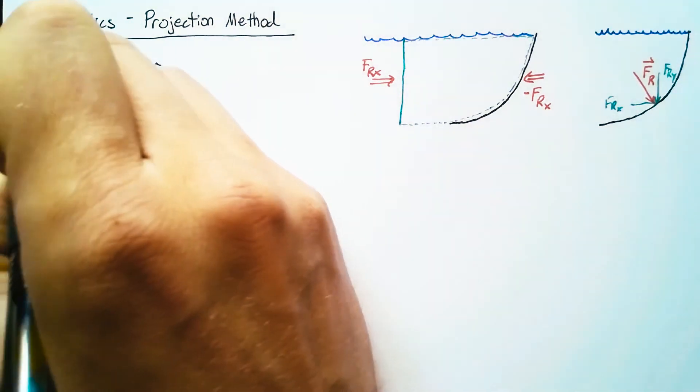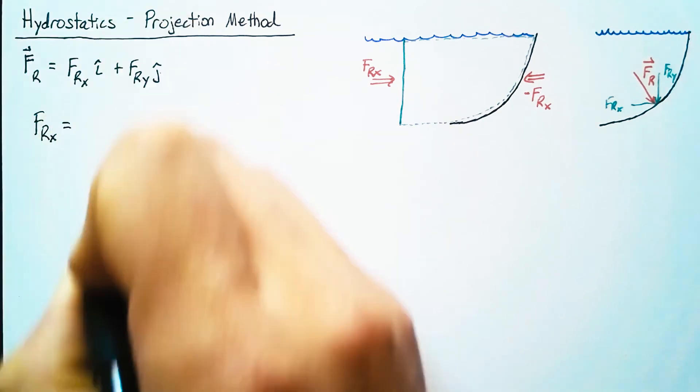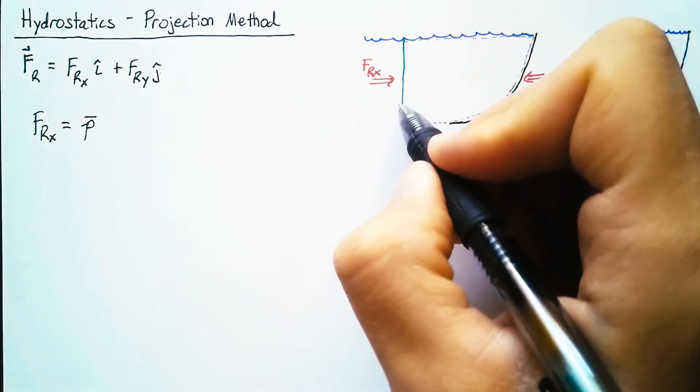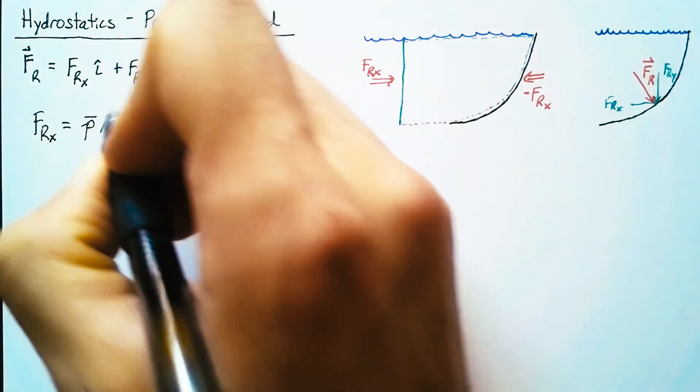Well, we know how to do this. The resultant force in x is just going to be the pressure at the centroid of this wall multiplied by its area.